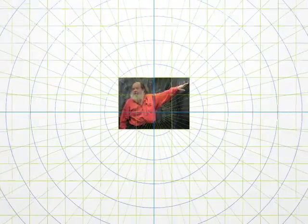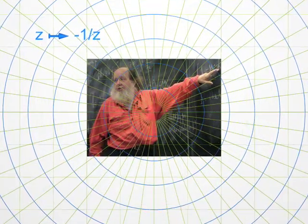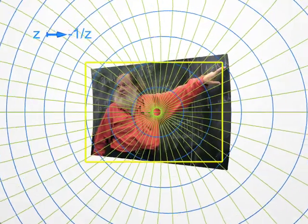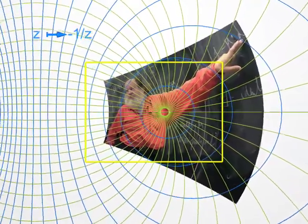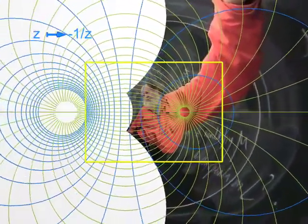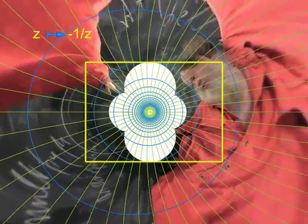Now let's go to a new transformation, sending the point Z to minus 1 over Z. Don't forget, with complex numbers, one can add, multiply, but also divide. Not by zero, of course. Doesn't this image remind you of the Sistine Chapel? Large complex numbers with a large modulus become small when one takes their inverses, and conversely.